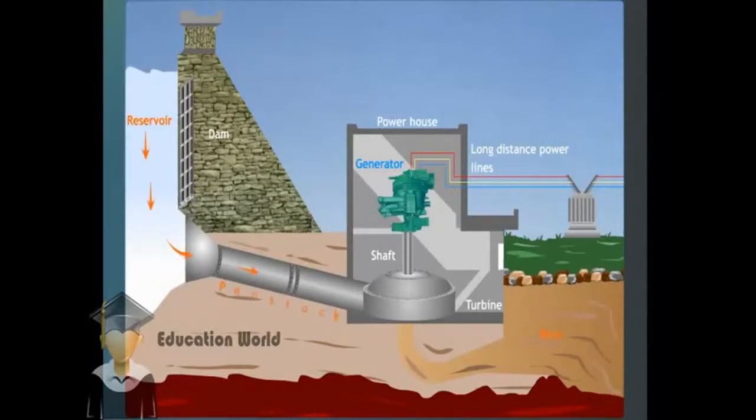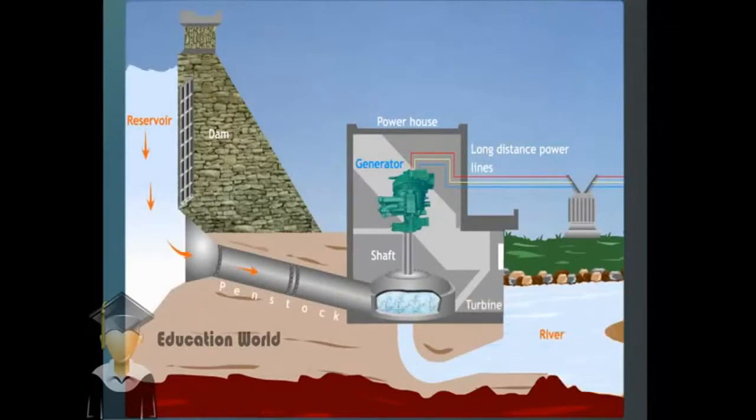Water flows through the penstock and rotates the turbine. The flowing water rotates the turbine which is placed at the end of the penstock.